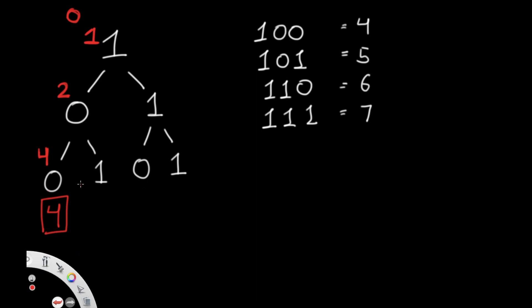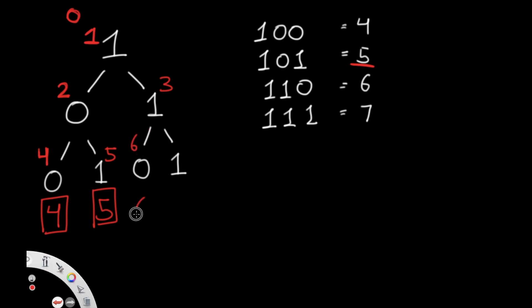Similarly, instead of starting from the root each time, we can just continue from where we branched. Starting from the sum of 2 at the middle-left node, we go right to value 1: 2×2 + 1 = 5. So path 1,0,1 equals 5. Then going to the right subtree from the root: 2×1 + 1 = 3. Going left to value 0: 2×3 + 0 = 6. So path 1,1,0 equals 6.